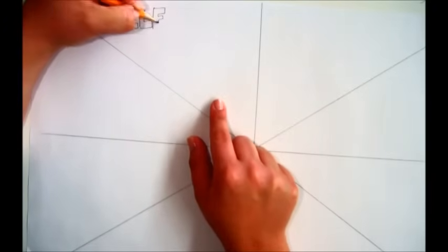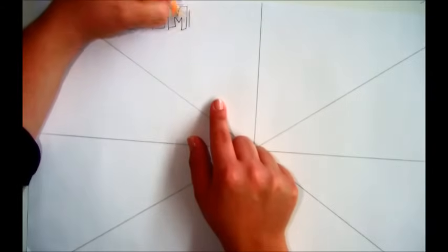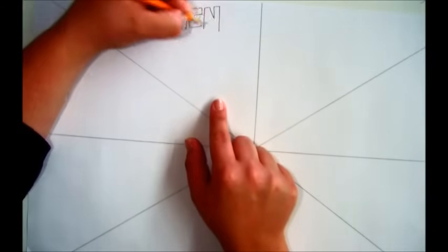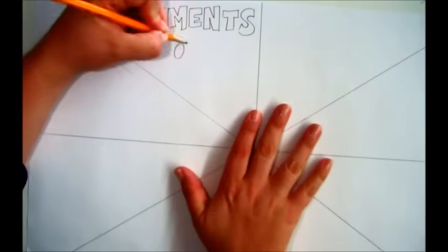In the upper left-hand section, label it Elements of Art. Try to use block letters or bubble letters if you can.